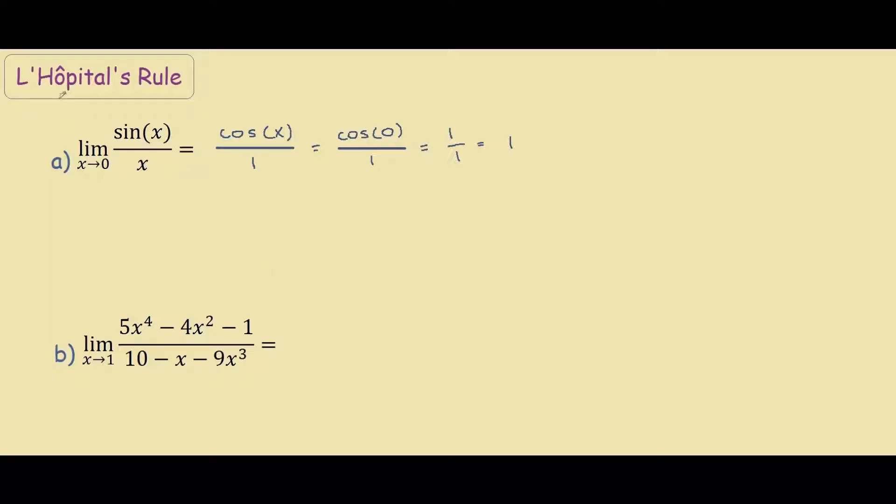So what we do is use L'Hôpital's rule, and we can easily solve this by finding the derivative of the numerator. So the derivative of 5x⁴ is 20x³, and the derivative of 4x² is 8x. This is all over the derivative of -x, which is -1 minus 27x².